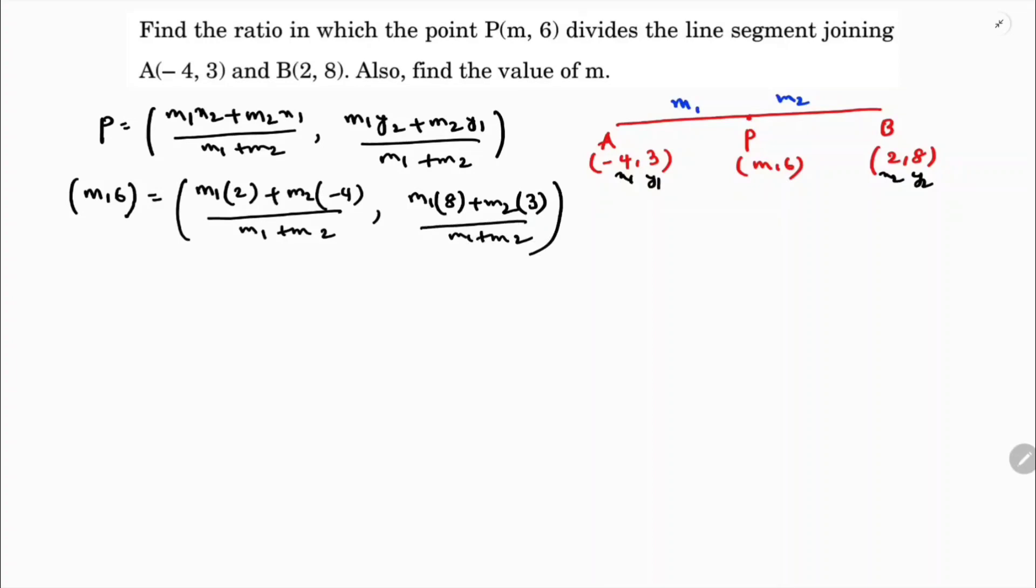Now in this case, if I equate abscissa with abscissa, no use because I don't know the value of m. So what I will do, I equate ordinate with ordinate here. So that is 8M1 + 3M2 by M1 + M2 equals 6. If I cross multiply this, 8M1 + 3M2 equals 6(M1 + M2).